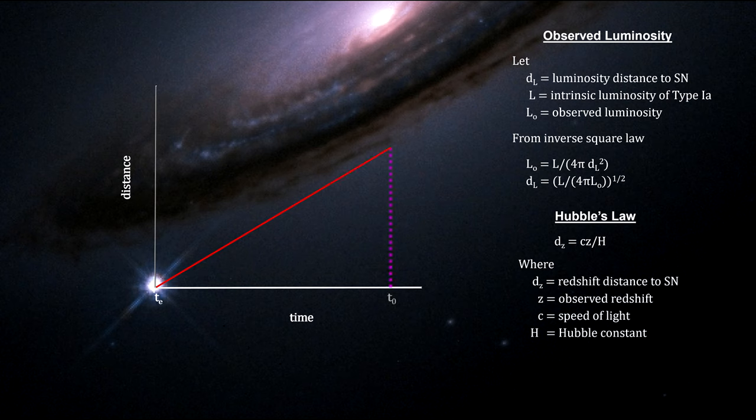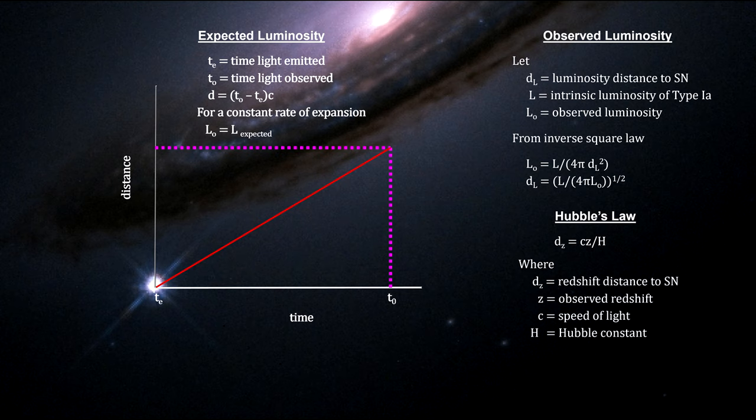If the expansion rate is constant, the luminosity distance and the redshift distance will be the same.